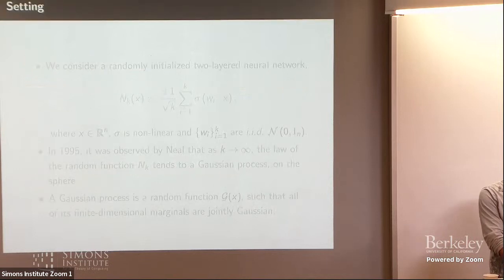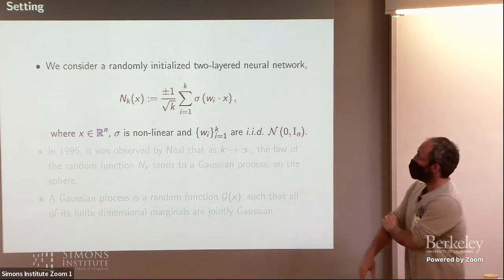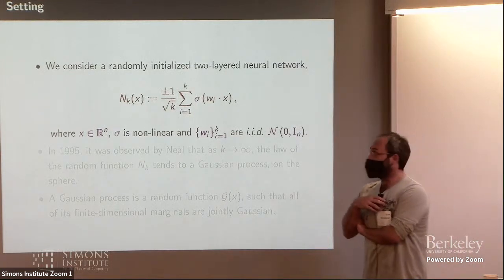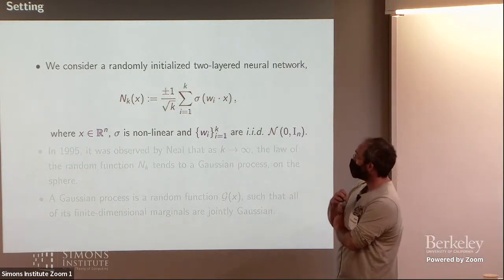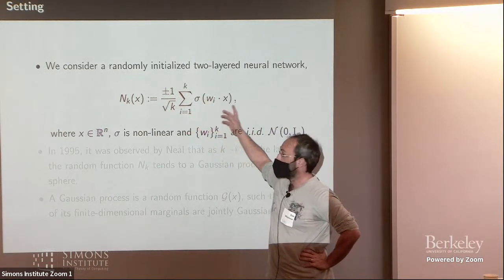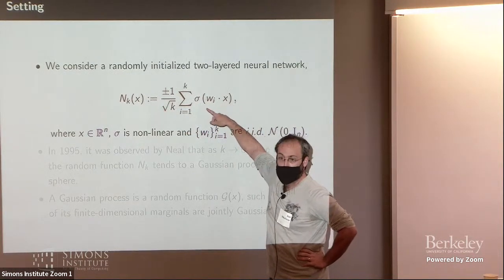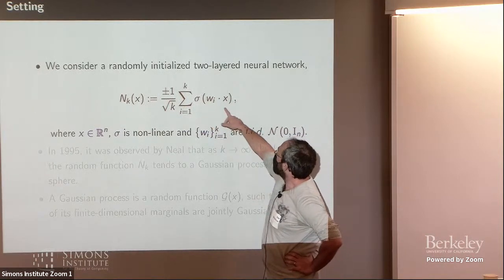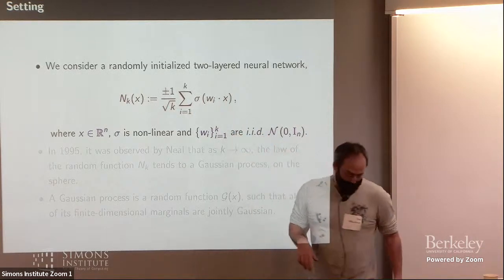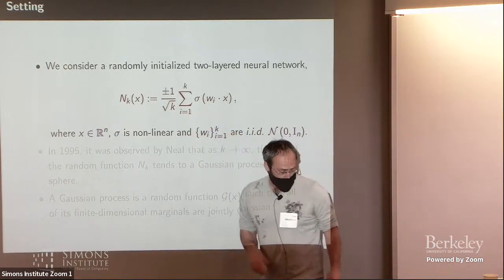So what is the basic setting I want to consider? For simplicity, a two-layer neural network at random initialization. Basically the same setting from before. But here we have a random function composed of a sum of independent linear functions composed with a non-linear activation function. So here X is a vector in R^n, and the random weights are generated independently as standard Gaussian. And then we give random signs and scale by square root of K, which makes sense when we want to talk about universality.